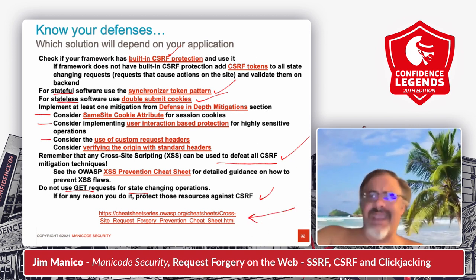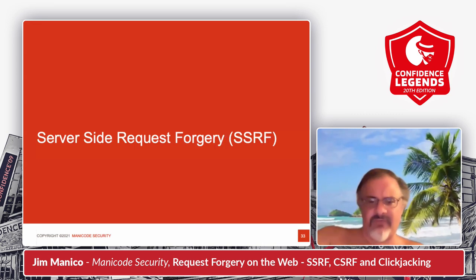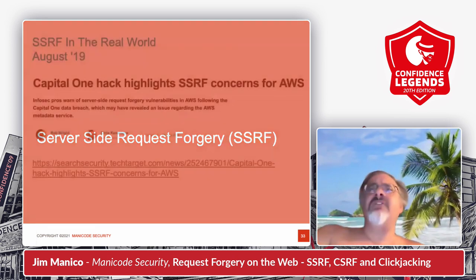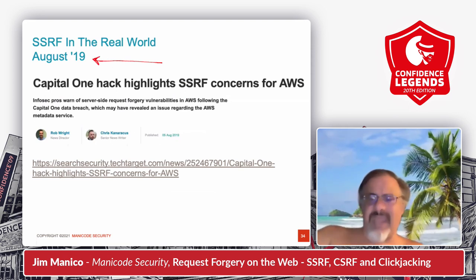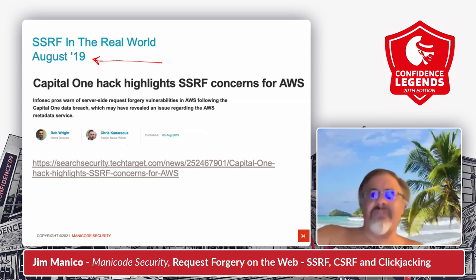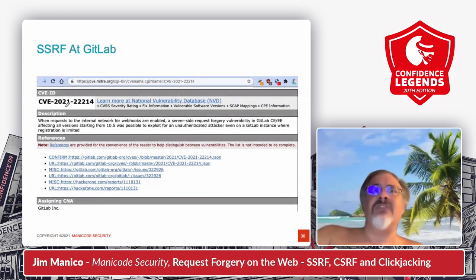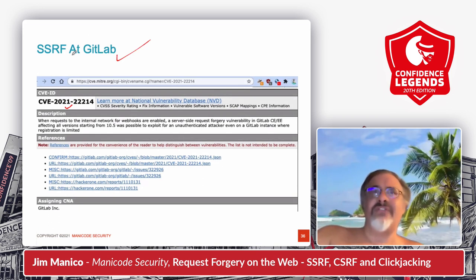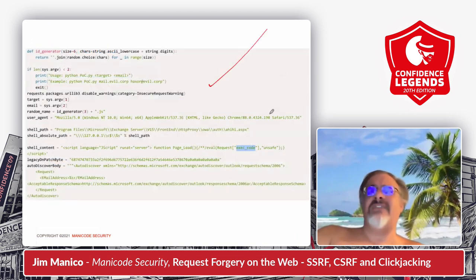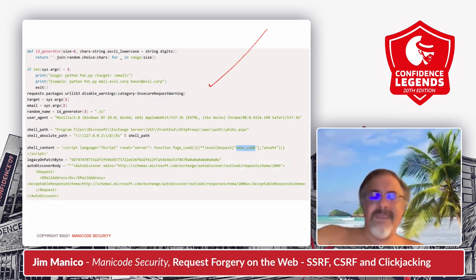That's the summary for cross-site request forgery — you should read the guide for more information. The other kind of forgery is server-side request forgery. This happened most recently in 2019 against Capital One, and we also saw this at GitLab in early 2021 where they had a major server-side request forgery. Microsoft Exchange also had a big CSRF. This is a big problem.